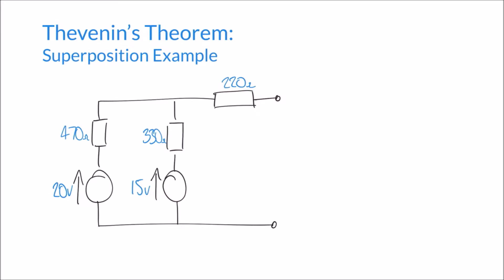Welcome to this video on Thevenin's Theorem. We continue to look at slightly more advanced examples. If you haven't watched our introductory videos on Thevenin's Theorem and the simpler examples, I suggest going back to those first. We're going to apply the same principles to this circuit, which has something slightly different — two DC voltage sources instead of one. We'll apply the superposition principle, which we've also looked at previously, alongside Thevenin's Theorem.